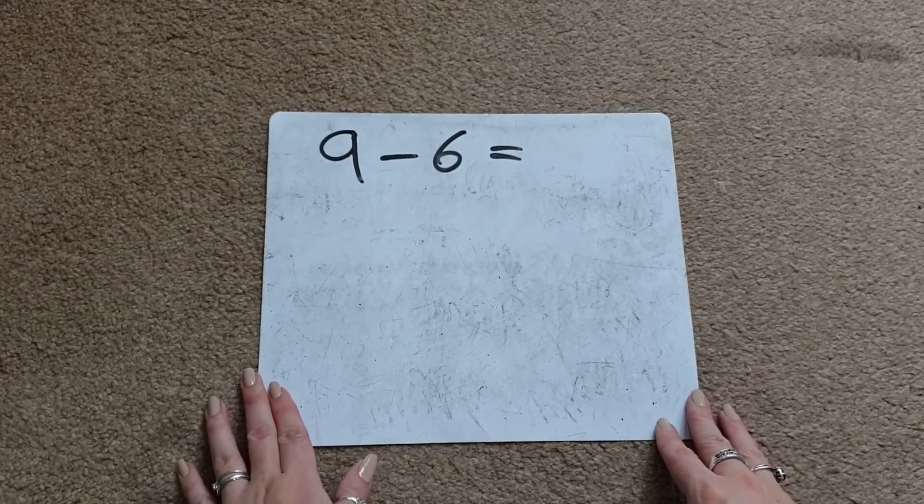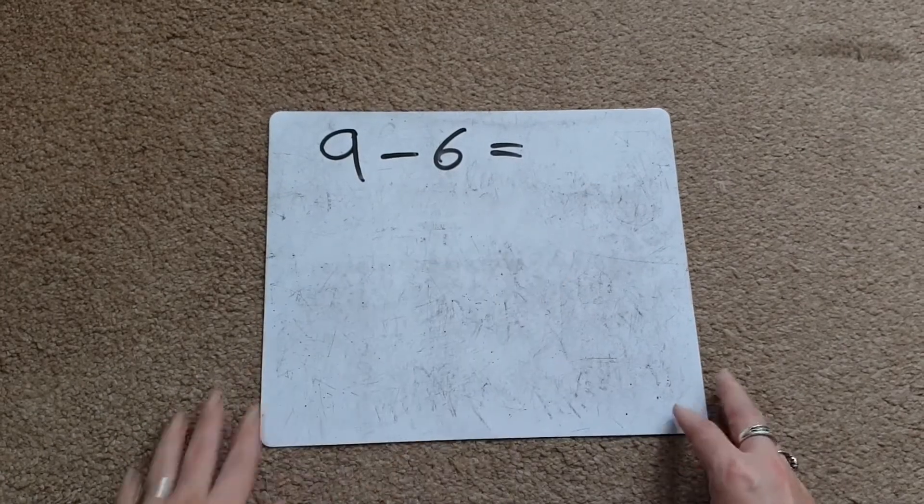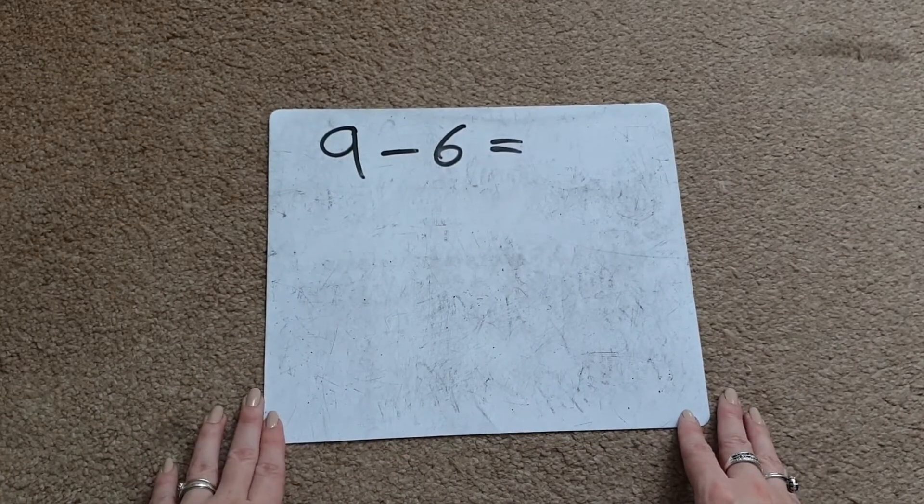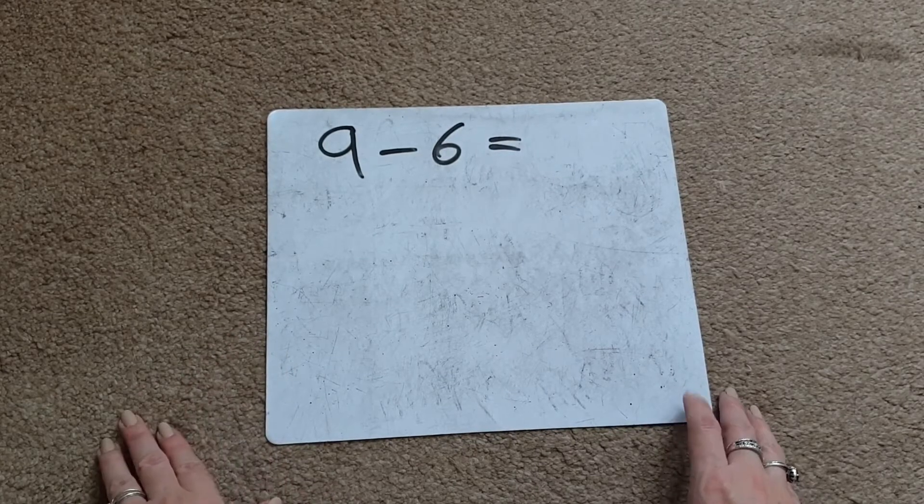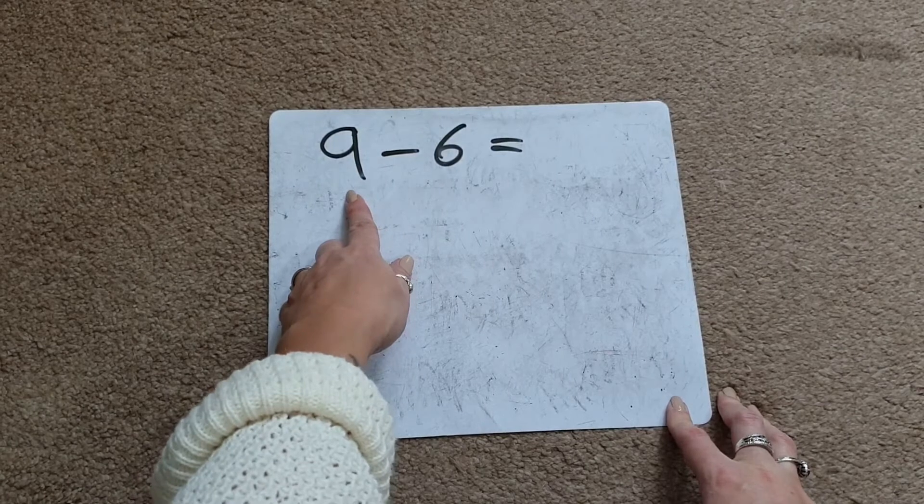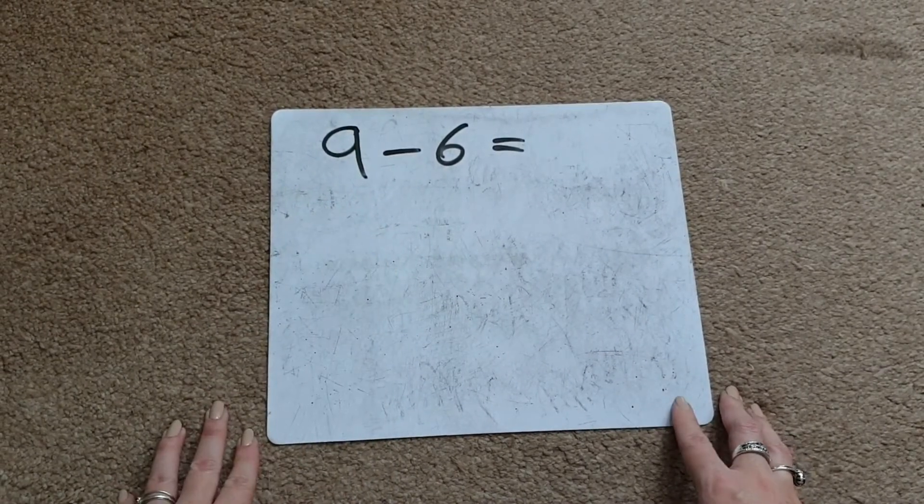So as I said before, we've got the calculation 9 take away 6 equals. What we're going to do is I'm going to ask them to figure out what number we're going to start with in our calculation. We're obviously going to start with the biggest number, and that's always going to be the first number in the calculation.